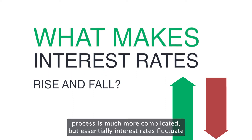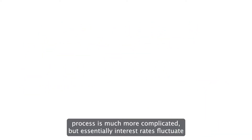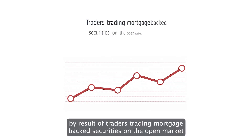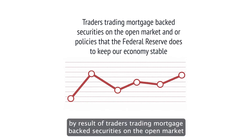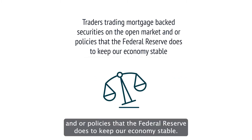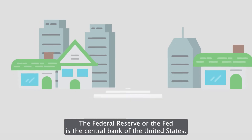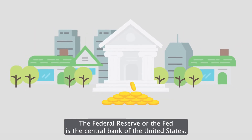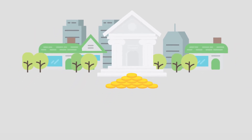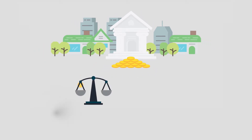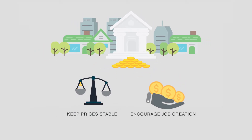The actual process is much more complicated, but essentially interest rates fluctuate as a result of traders trading mortgage-backed securities on the open market, and policies that the Federal Reserve uses to keep our economy stable. The Federal Reserve, or the Fed, is the central bank of the United States. It has three main goals: to keep prices stable, make sure inflation doesn't get out of control, and to encourage job creation.